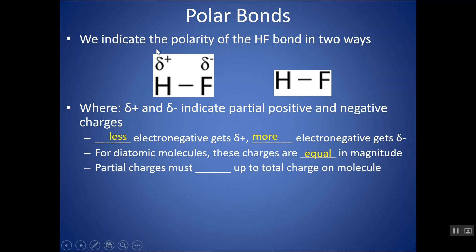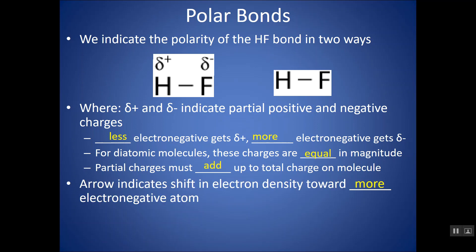The partial charges should cancel each other out to add up to the total charge on the molecule — so plus and minus cancel out to be neutral. Another way to show polarity is to draw an arrow indicating the shift in electron density. Since electrons hover closer to fluorine, I put an arrow pointing toward the fluorine. Either one of these is perfectly acceptable if they ask you to show the polarity of the bond. I typically gravitate toward the partial charges, since when we do formal charges, we put little charges above atoms, so it goes along with that pretty nicely.